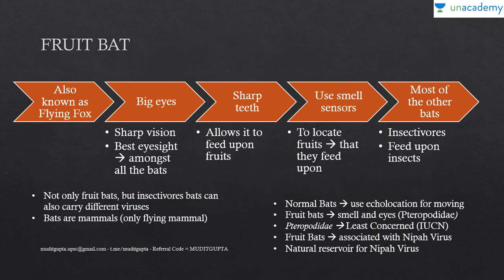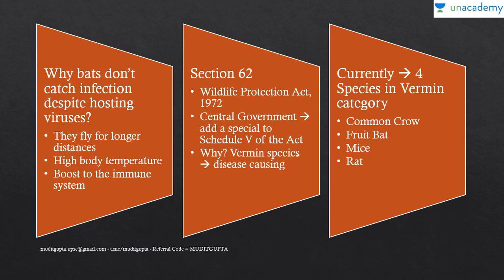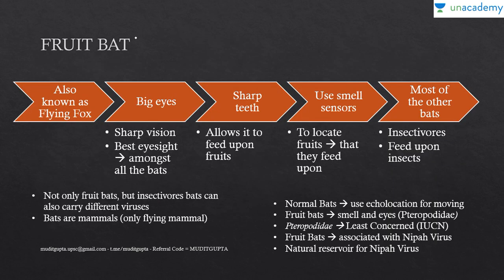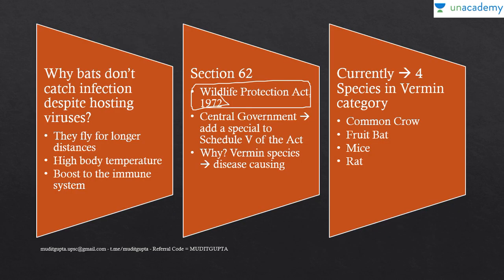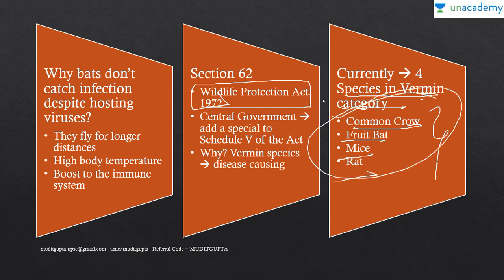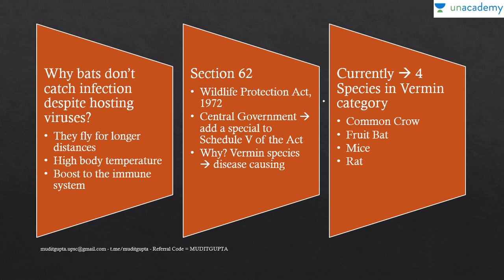When the Nipah virus spread, the fruit bat was placed in Schedule 5 of the Wildlife Protection Act, declaring it a vermin species. As of today, there are 4 species that are vermin species under Schedule 5: common crow, fruit bat, mice, and rat. These 4 species have been declared vermin species by the central government — not state government, but the central government — under Schedule 5 of the Wildlife Protection Act 1972.